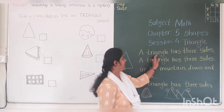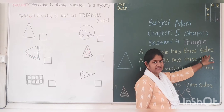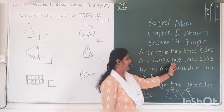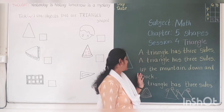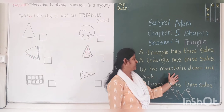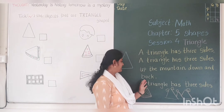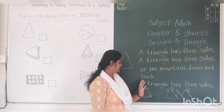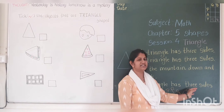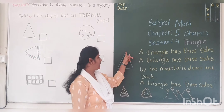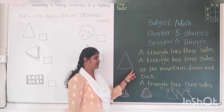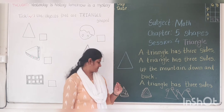A triangle has 3 sides. Up the mountain, down and back. A triangle has 3 sides. 1, 2, 3. 3 sides.